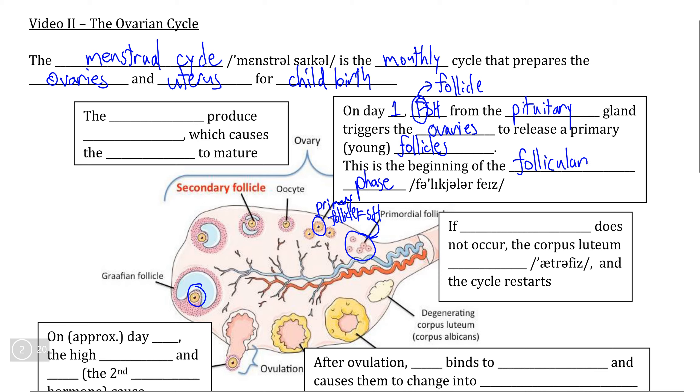The follicular phase tends to last from day one up until about day 14 or 15, meaning that it comprises approximately half of the monthly menstrual cycle.